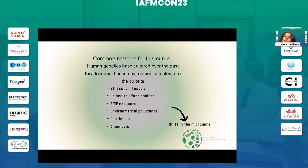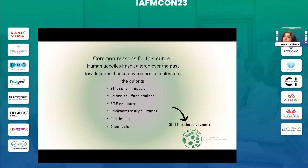The common reasons for this surge — human genetics have not altered over the past few decades, so what has changed is the epigenetics and the epigenetic environment. Most of these so-called genetic diseases have a 20% genetic element and are 80% environmental or epigenetic. As our mentors rightly said, genetics loads the gun and epigenetics shoots it. Stressful lifestyle, unhealthy food choices, EMF exposure, environmental pollutants, pesticides, and chemicals are all contributing to disruption of the gut microbiome and a constant chronic inflammation.